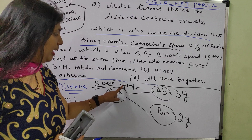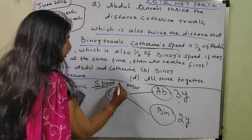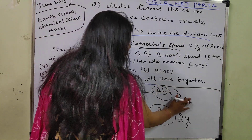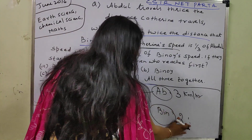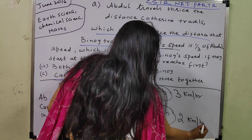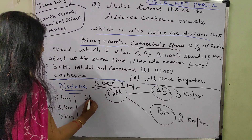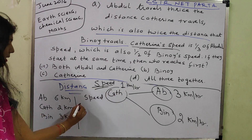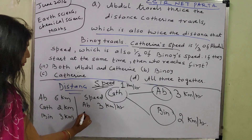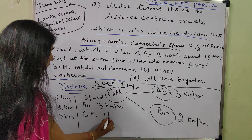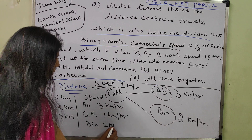Let us put Y equal to 1, so it becomes very easy. Writing 1 kilometre per hour for Catherine. Then Abdul's speed is 3 times 1, which is 3 kilometres per hour. And Benoit's speed is 2 times 1, which is 2 kilometres per hour. So speed of Abdul is 3 km/hr, Catherine is 1 km/hr, and Benoit is 2 km/hr.